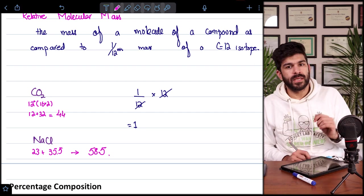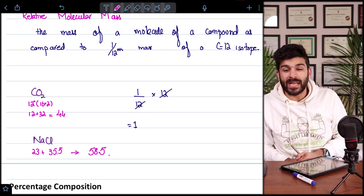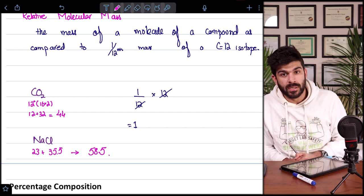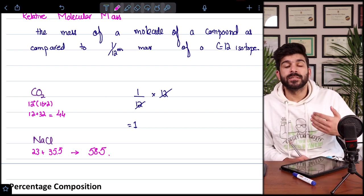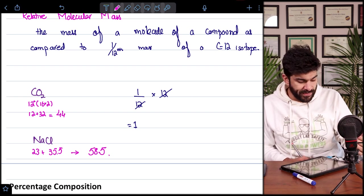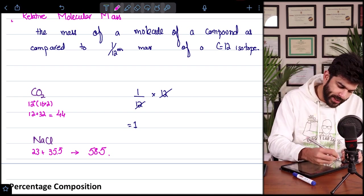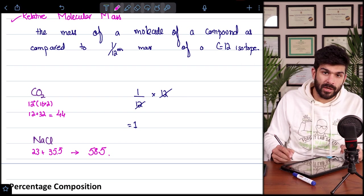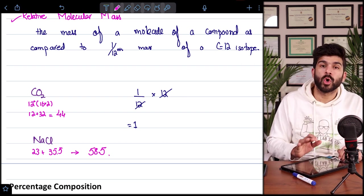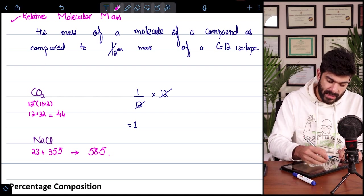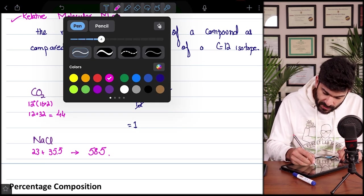Now there is one difference between the masses of carbon dioxide and sodium chloride. We know that carbon dioxide is a covalent compound. So when we talk about covalent compounds, we talk about relative molecular mass. But in the case of NaCl, we will not call it relative molecular mass.